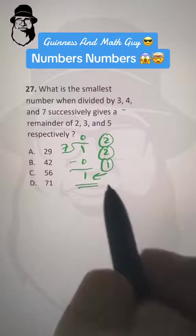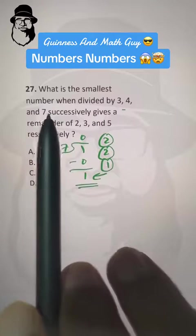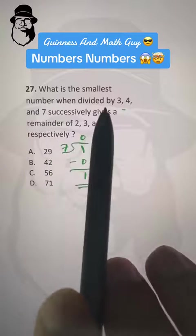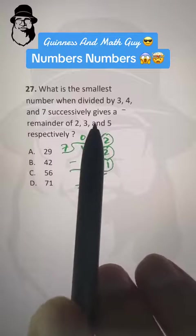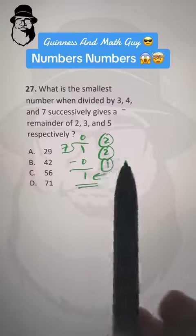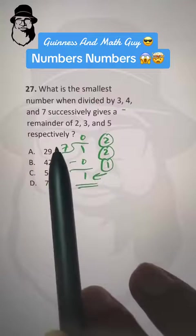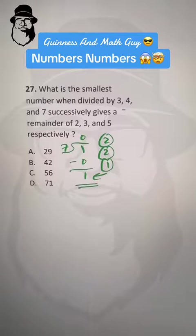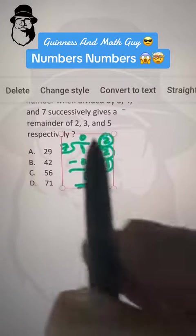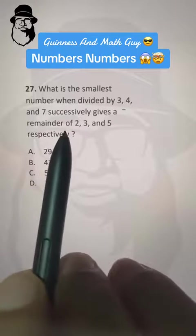So if the question is what is the smallest number when divided by 3, 4 and 7 successively gives a remainder of 2, 2 and 1 respectively, then our answer will be 20. Now you understand what I mean by the word successively here.